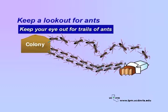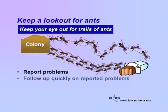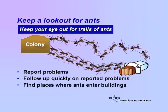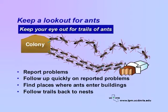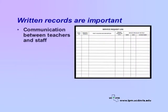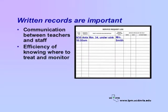Look for trails of ants whenever you are walking on campus. Report problems to your custodian or IPM coordinator. If it is your job, follow up quickly on reported problems. Find places where ants enter buildings. When you spot ant trails, follow them from the attractant to the nest, if possible. Written records are important. Records keep the communication lines open between teachers and staff. Place a monitoring form in a common area where teachers and other staff can report pest problems. Map locations where problems occur — this is an efficient way of knowing where to monitor and treat.